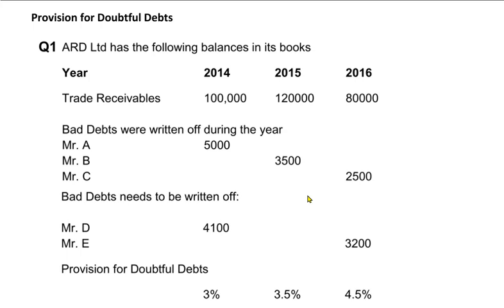Bismillahirrahmanirrahim. Dear students, today the topic we are going to cover is provision for doubtful debts. Provision means an estimate. Doubtful debt means debt that can turn bad in the future. So the bad debts or irrecoverable debts that are going to happen in the future — we do not just wait and see when the actual debt turns bad. Instead, we are going to be proactive and estimate those bad debts and book them immediately. Provision for doubtful debt is an application of the prudence concept.